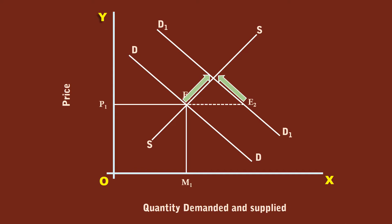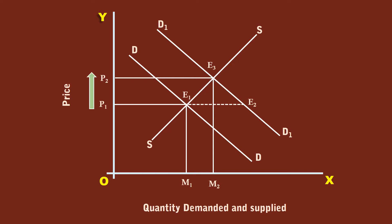At last, a new equilibrium is reached at E3, where new demand curve D1D1 cuts the supply curve SS. The new price is P2 and the new equilibrium quantity is M2. The net result is the price increases from P1 to P2 and the quantity increases from M1 to M2. The impact of increase in demand is partly absorbed by price and partly by quantity.